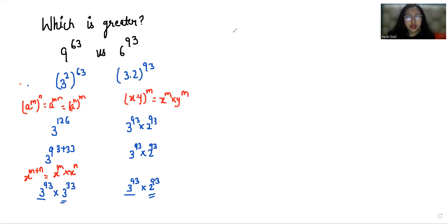That is 3 power 33 versus 2 power 93. Now, 2 power 93 I can write as 2 power 92 plus 1.